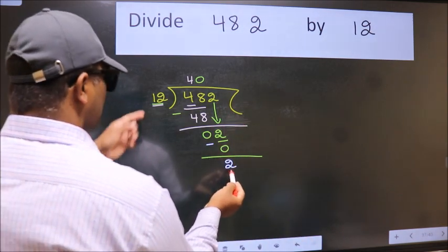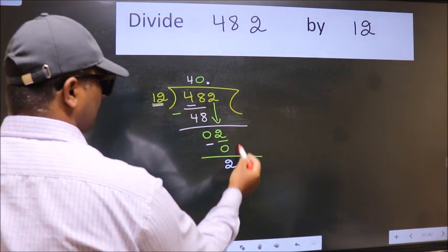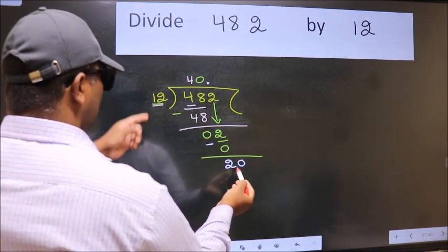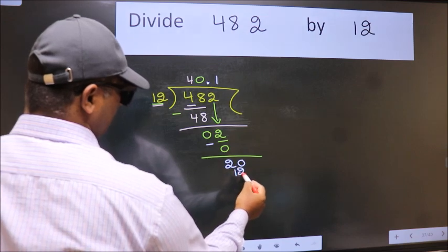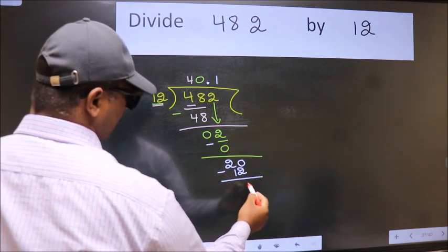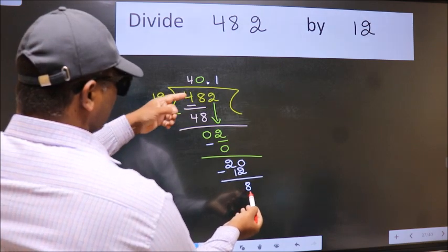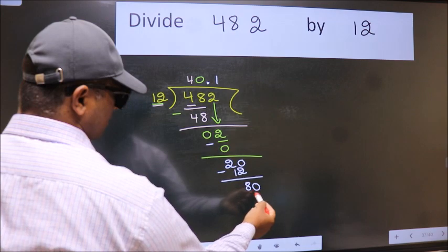And 2 is smaller than 12, so now we can put dot and take 0. So 20. A number close to 20 in 12 table is 12 once, 12. Now we subtract. We get 8. 8 is smaller than 12. We already have the decimal, so directly take 0. So 80.